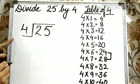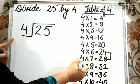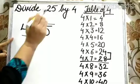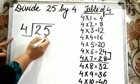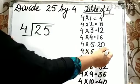Students, 4 sevens are 28. We cannot take this because 28 is greater than 25. So, we will take 4 sixes are 24.